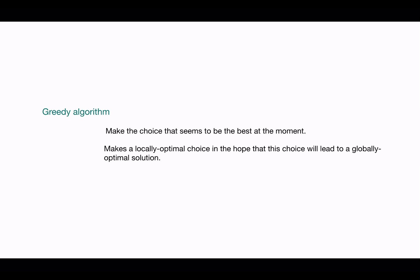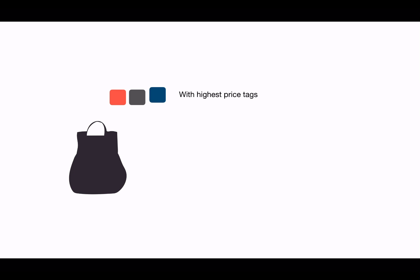This means it makes a locally optimal choice in the hope that this choice will lead to a globally optimal solution. If you have a few things to choose from a bag with price tags but they are absolutely free, you might become greedy and choose the items with the highest prices. But what if you are asked to choose items within a maximum capacity? You can start choosing the highest-tagged item first — that's human nature being greedy.